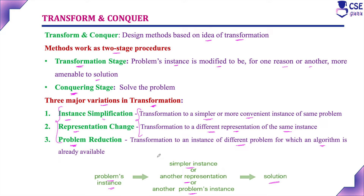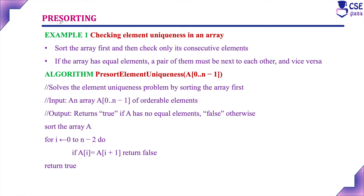A simple example of transform and conquer is pre-sorting. Pre-sorting means the given array is sorted before solving the main problem. For example, consider checking for element uniqueness in an array — we need to check whether any repeated elements are present. If we sort the array first, any repeated elements will appear next to each other, making it easy to check uniqueness.